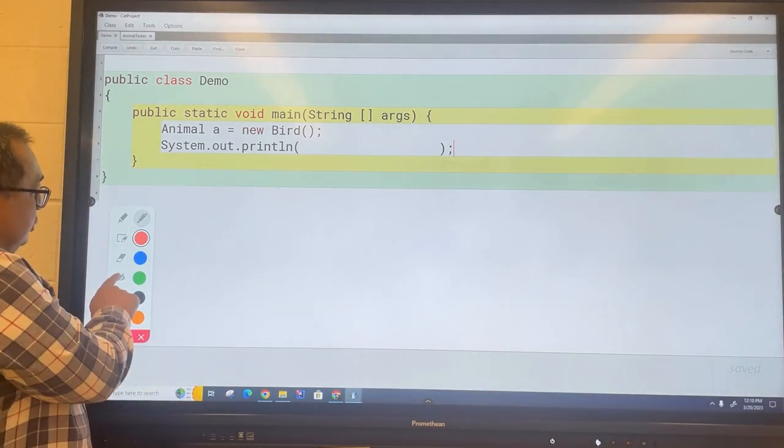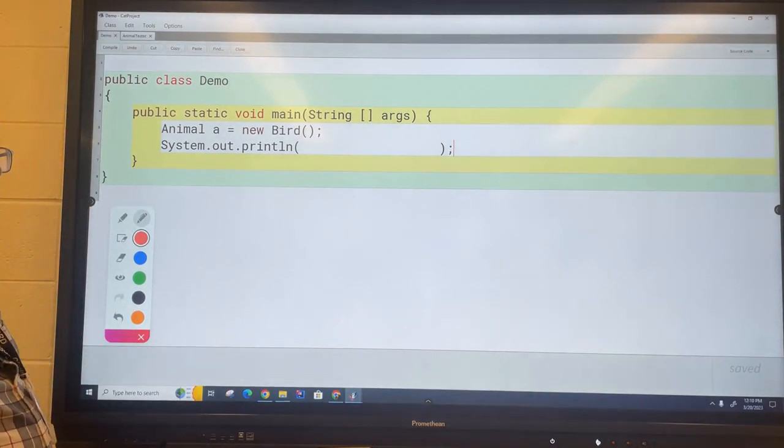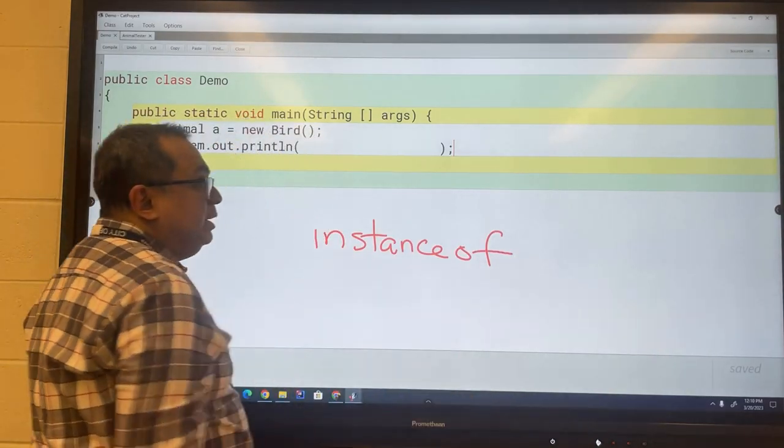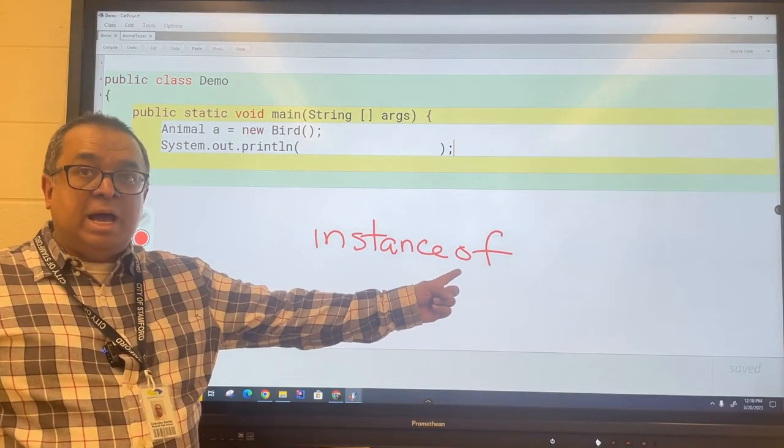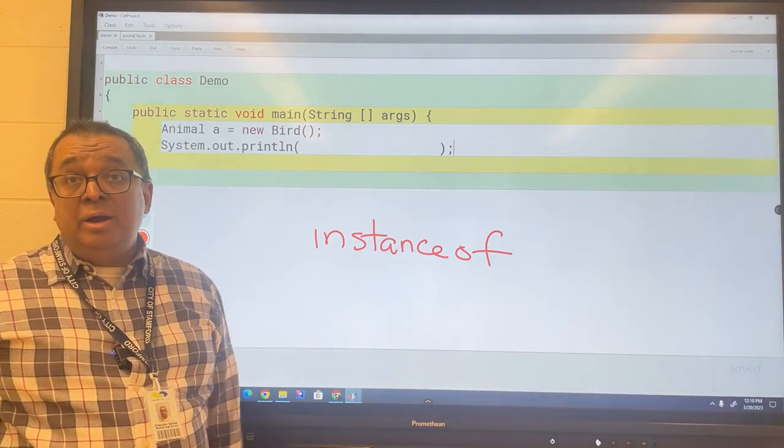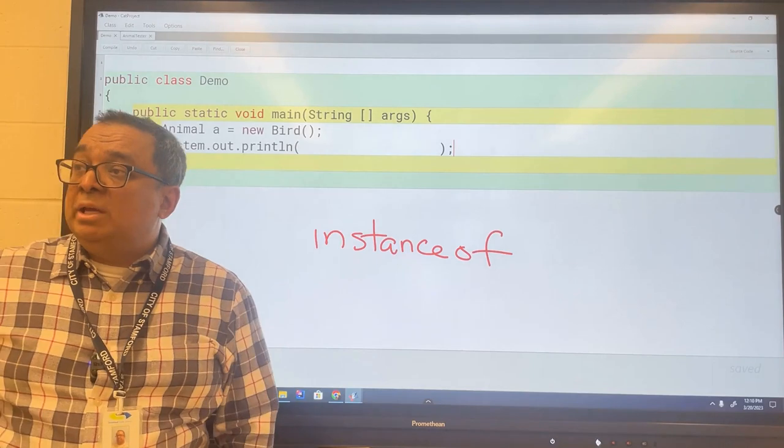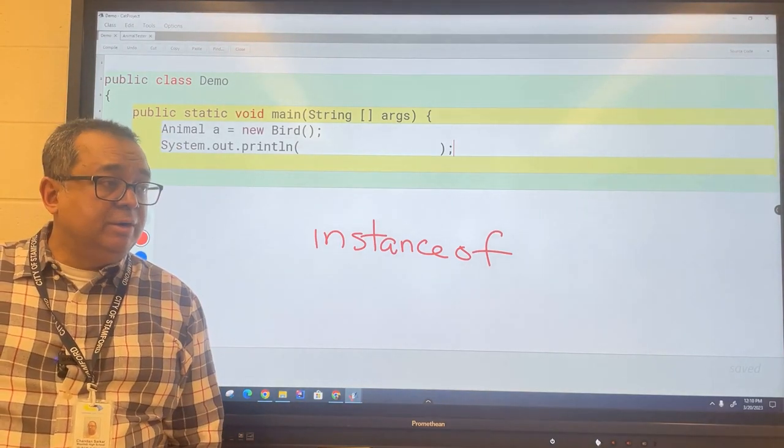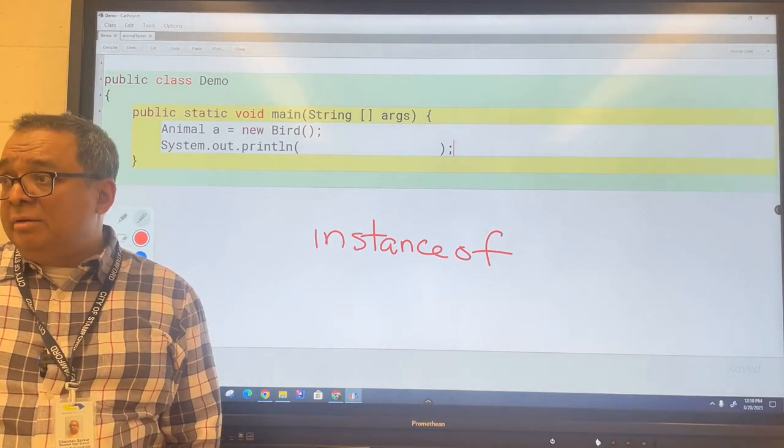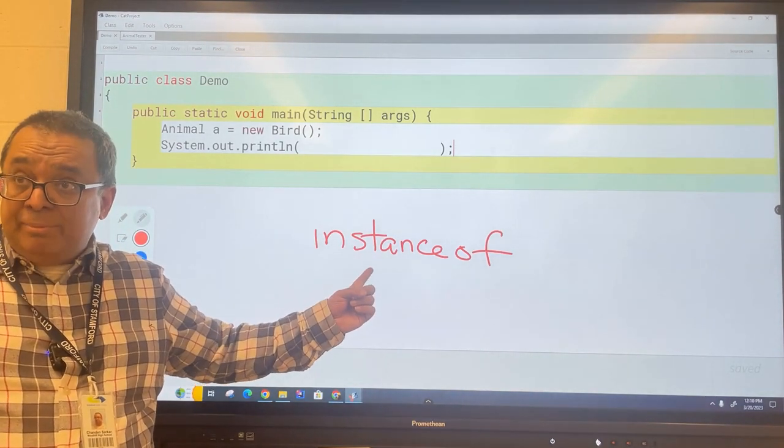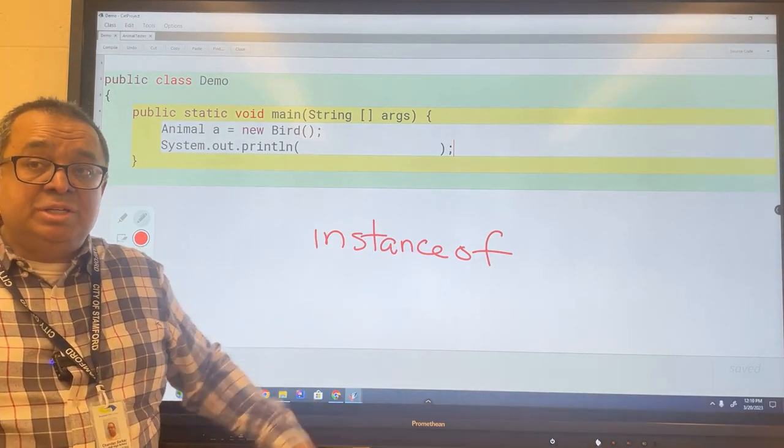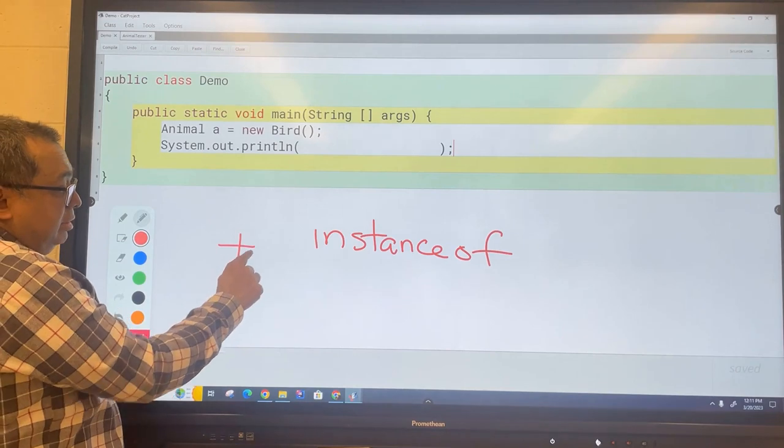So to do that we're going to introduce a new operator. This operator is called instanceof, it's an operator. Now you might be wondering how come the O is not capitalized because we've been using camel casing all through the year. When do we use camel casing? Variable objects, things like that, right. That's not a variable, that's an operator. This is just as much an operator as this one or this one.